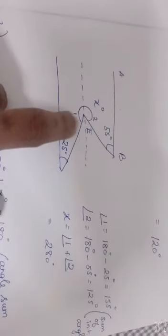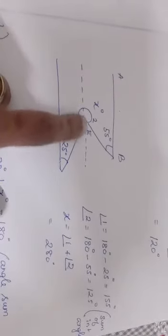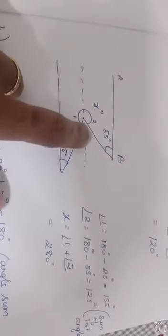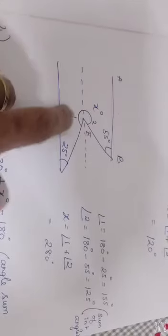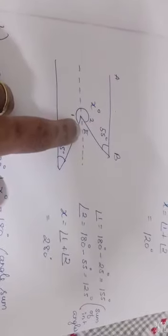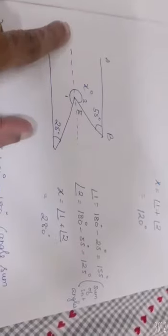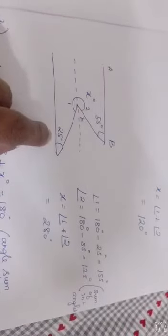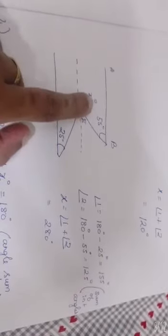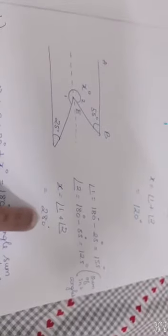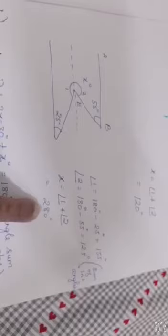This is also the same type, but here you can see the angle is in this shape, so definitely it's going to be a reflex angle and the value will be more than 180 degrees. You are going to make use of sum of interior angles. You are going to find one and then add it, and the final answer is 280 degrees.